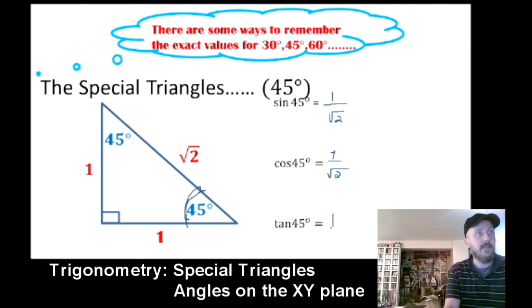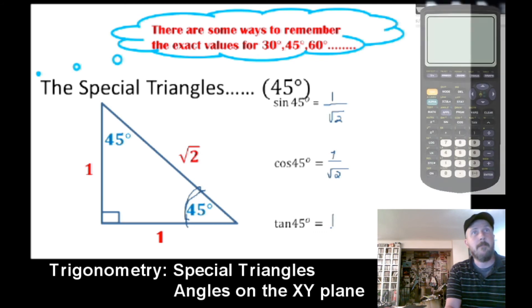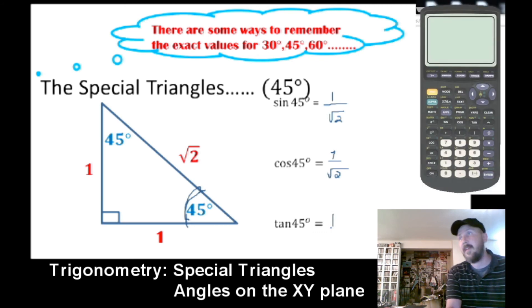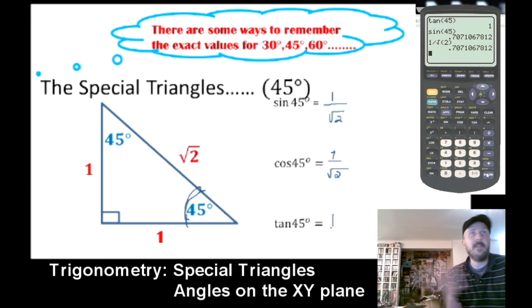For example, if I pull my calculator up, I guess the only one that we really could check would be tan 45. Tan 45, we should get 1, right? There we go. We got 1. We could do sine 45. And we get this weird 707. Let's check if that's the same thing. 1 divided by root 2 equals. There we go.